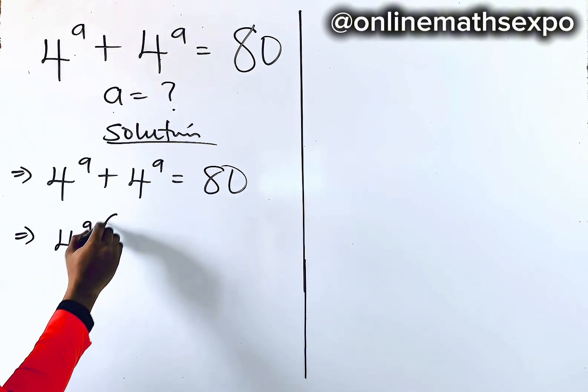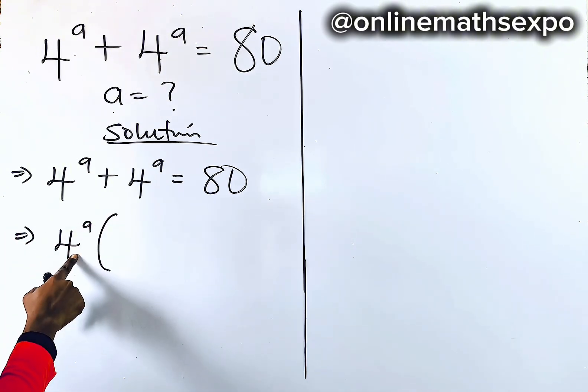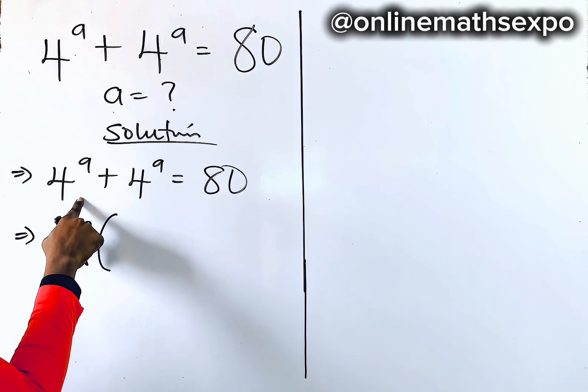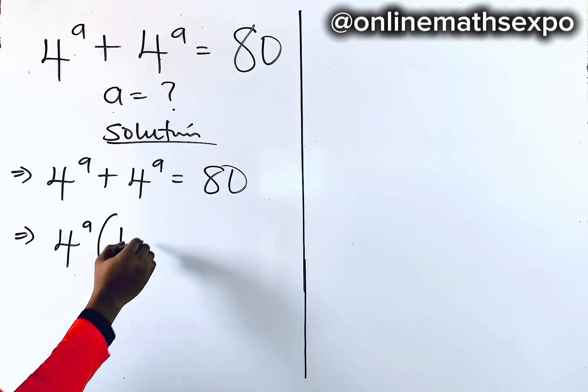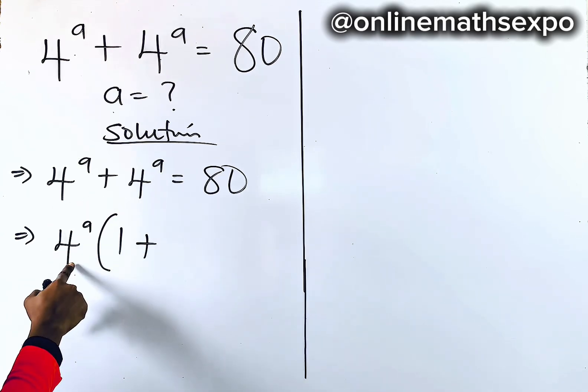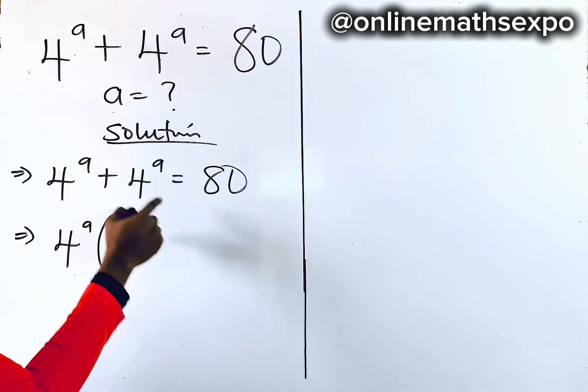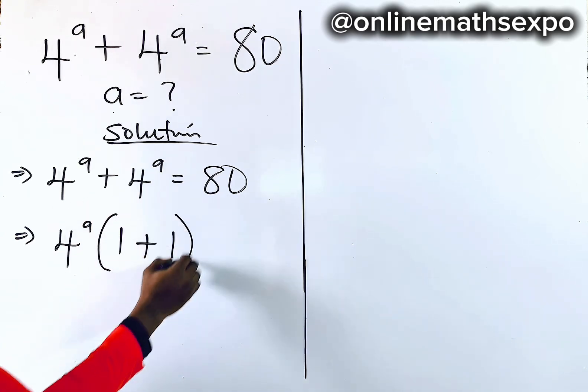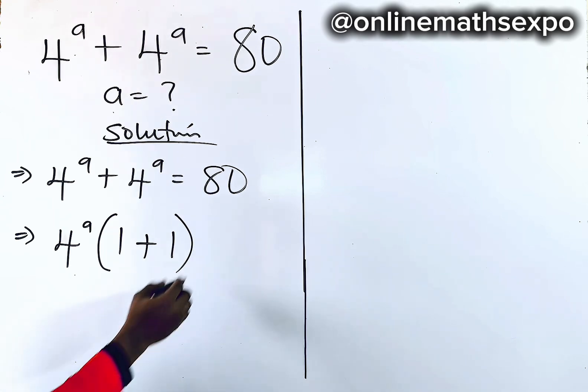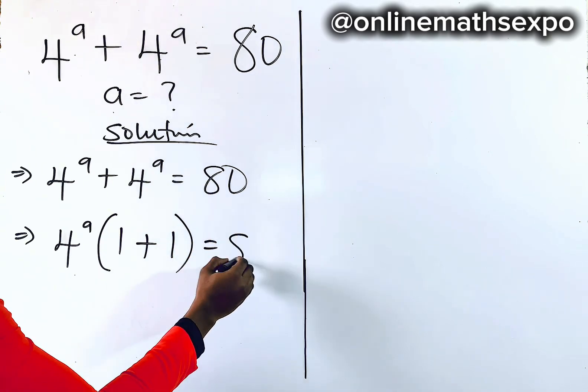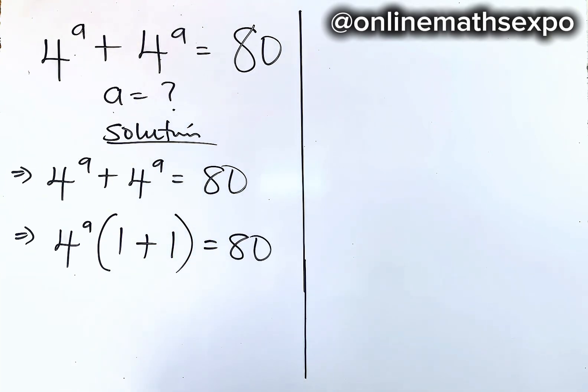Then open a bracket. When this divides this, it gives you 1. Plus, use this to divide — it also gives you 1. So everything inside the bracket is 1 plus 1, all equal to 80.